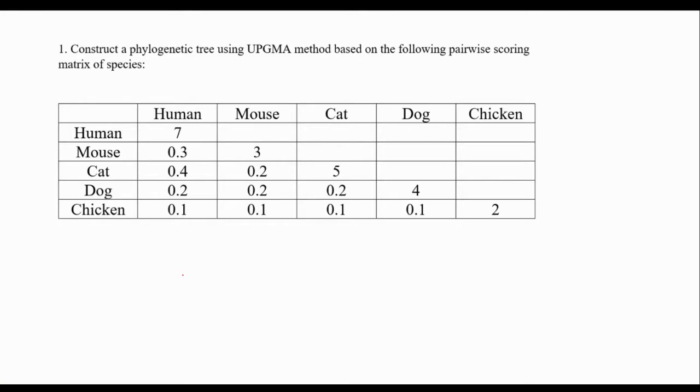The difference between this example compared with the one that we mentioned in the lecture is related to this matrix, because in the lectures we directly given you the distance matrix, but here we are seeing the pairwise scoring matrix of species. So the question is how we can convert such scoring matrix into distance matrix, and the rest will be exactly the same as we explained in the lecture.